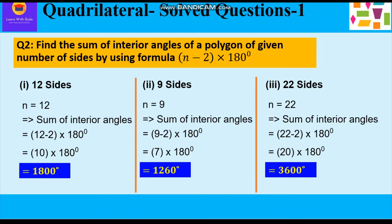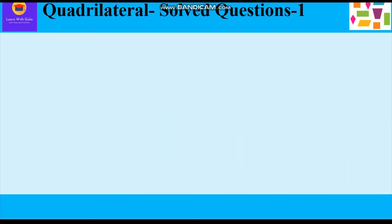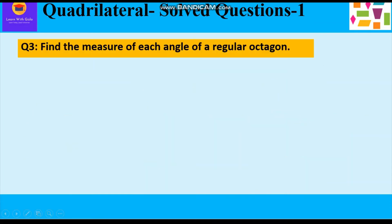So in question 2, we found the sum of interior angles of an n-sided polygon using the formula (n − 2) × 180°. Now let's take up question number 3: find the measure of each angle of a regular octagon.